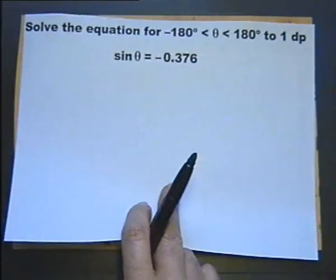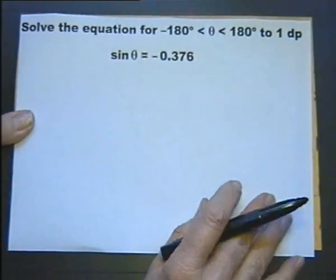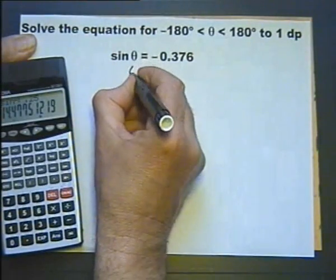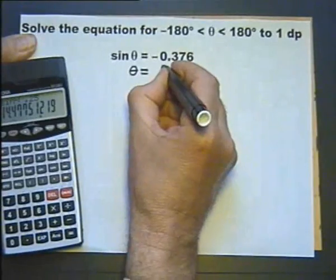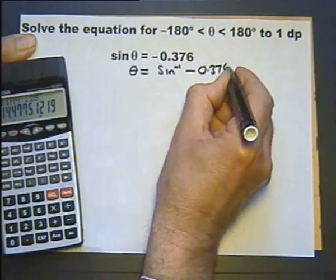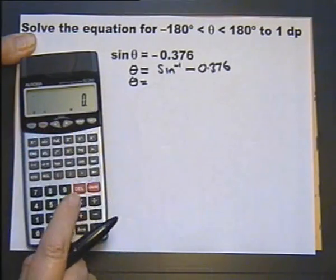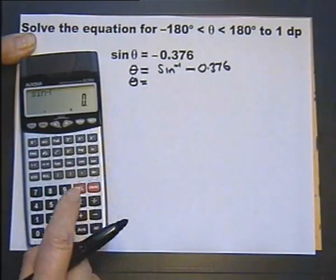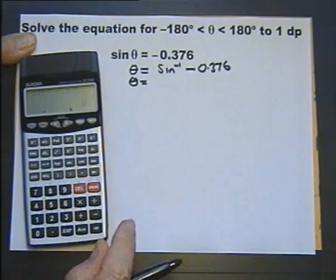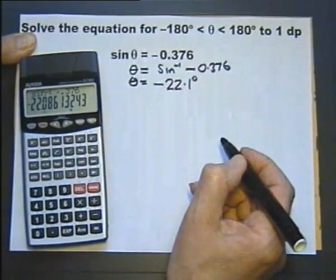Now let's have a look at it again, but with a different possible range for our values. So to start with, let's use the calculator. Inverse sine of both sides. We inverse sine sine theta, we get whatever theta is. So we need to inverse sine the other side. And the inverse sine of negative 0.376 equals, and that gives us an answer minus 22.1 degrees to one decimal place.